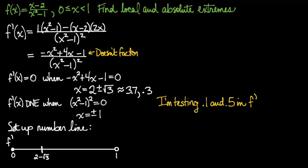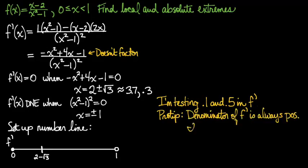Now I need test values. I think I'm going to test 0.1 and 0.5. I'm going to test those values in f prime and find out whether the derivative is positive or negative. Now here's a pro tip. When I test values, I look at the function f prime, and I notice that the denominator is always positive no matter what. It doesn't affect the sign of f prime.